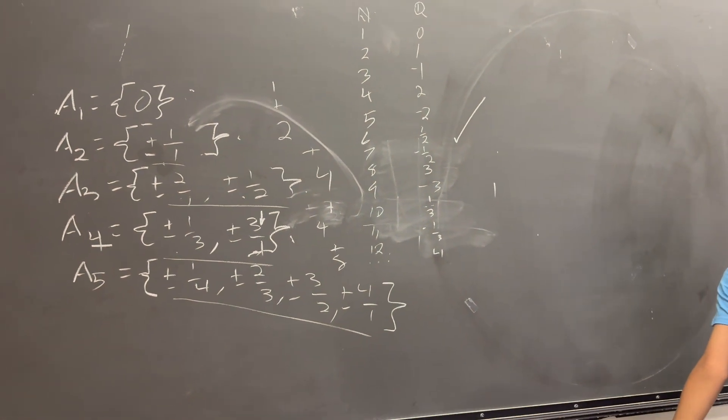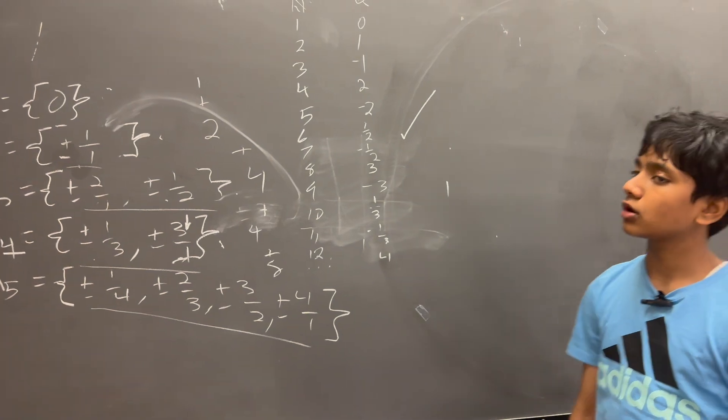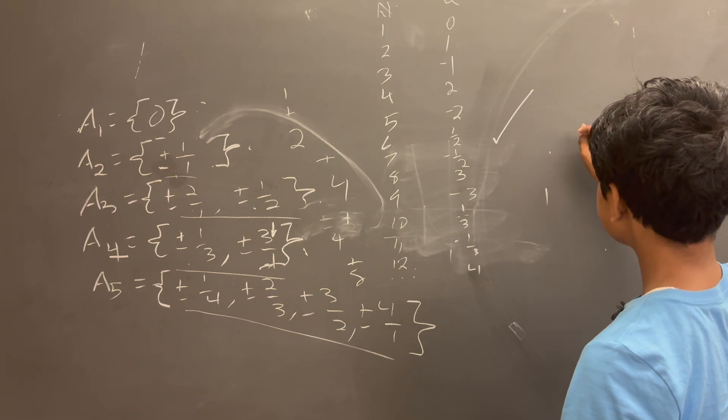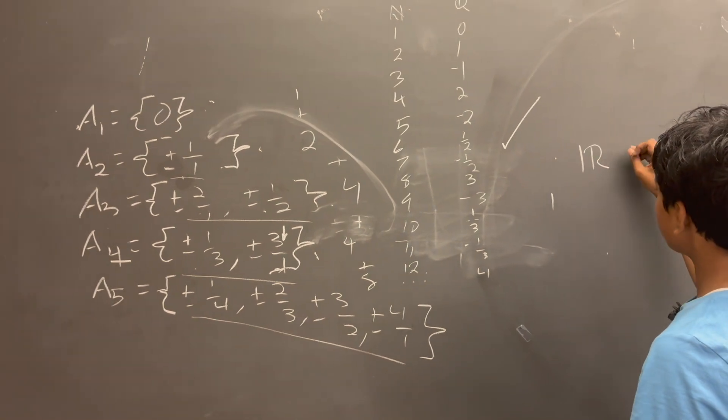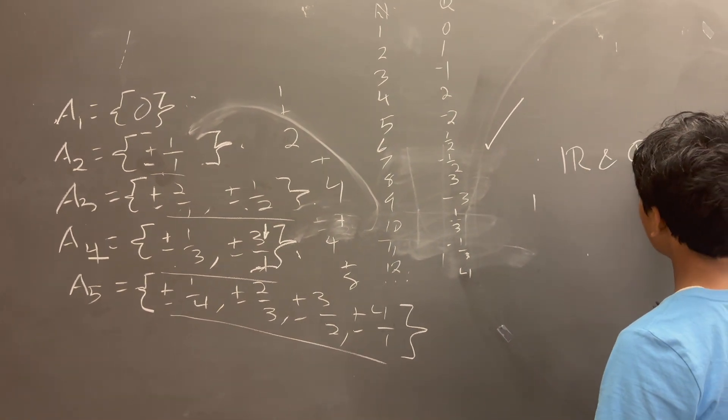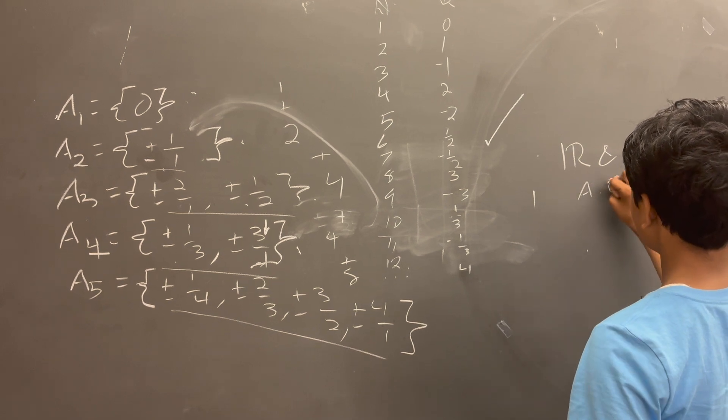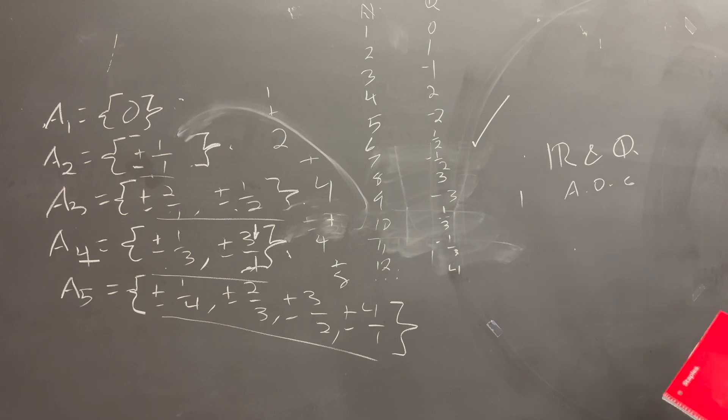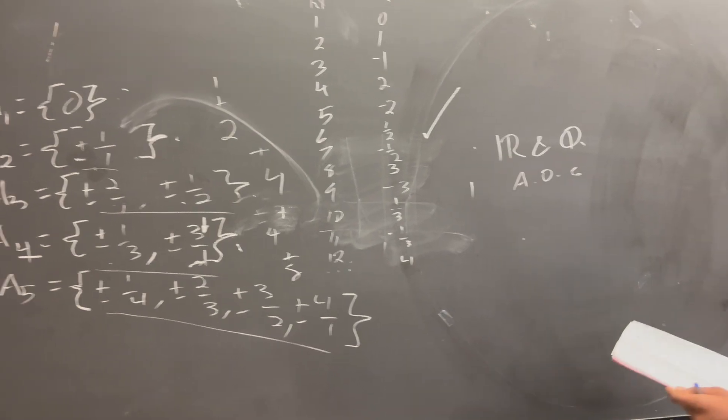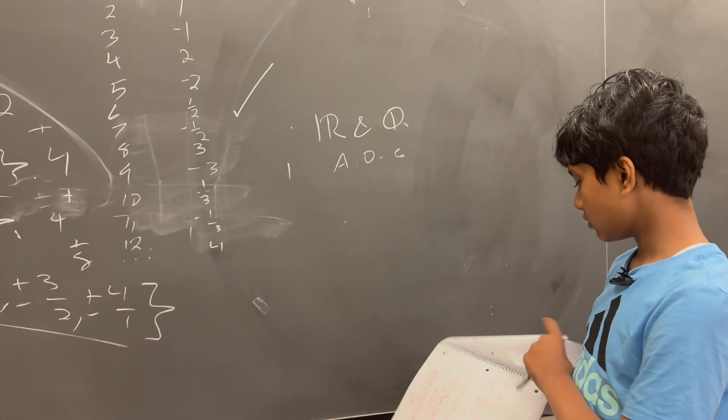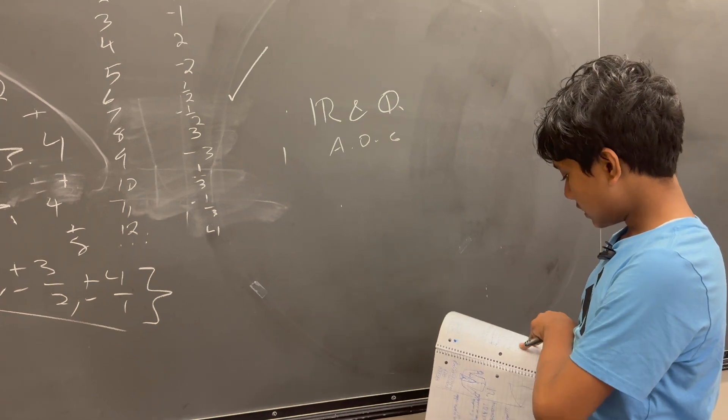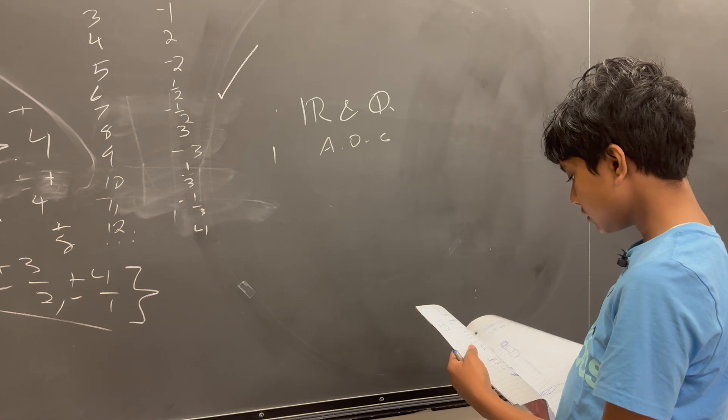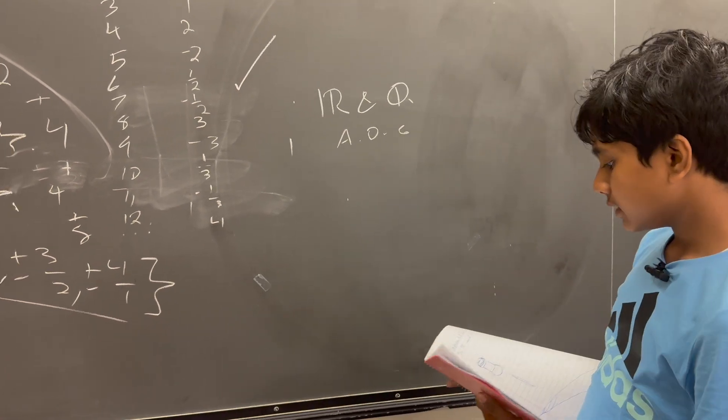How come this isn't the case with R? What's the one difference between R and Q? The axiom of completeness. That is what differentiates them. This proof is actually a little bit harder. I haven't opened up my notebook yet, so let's take it out right about now.